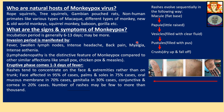Rashes evolve sequentially in the following way: first a macule with a flat base, then it turns into a papule with a slightly raised base, then a vesicle filled with clear fluid, then pustules filled with pus, and finally a crust that dries up and falls off. There are four visual stages shown: macule, papule, vesicle, and pustule stage. The crust stage is not depicted in the image.